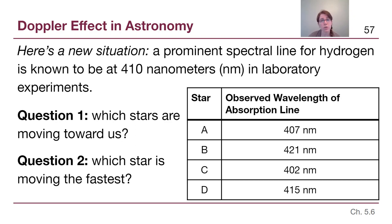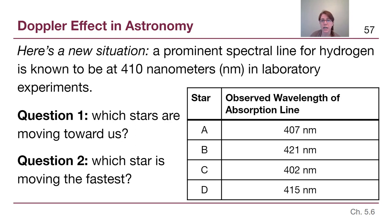For question two, we have to do a little bit of math. To know which star is moving the fastest, we have to know how much change there is. For star A, the difference is 3 nanometers. For star B, it's 11 nanometers — that seems like a lot. For star C, the difference is 8 nanometers. And for star D, 415 compared to 410 is a difference of 5 nanometers. Out of all of these stars, star B is moving the fastest because the change is the greatest difference. 421 compared to 410 is the biggest shift, meaning fast motion.